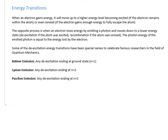Some de-excitations have been given special names to honour famous researchers. Balmer, Lyman, and Paschen did significant work in quantum mechanics, so de-excitation series are named after them. The Balmer emission is any de-excitation that ends at n equals 1 — it can start from the ionized state, n equals 4, 5, or wherever, but it ends at n equals 1. Lyman is any de-excitation ending at n equals 2, and Paschen is any de-excitation ending at n equals 3.